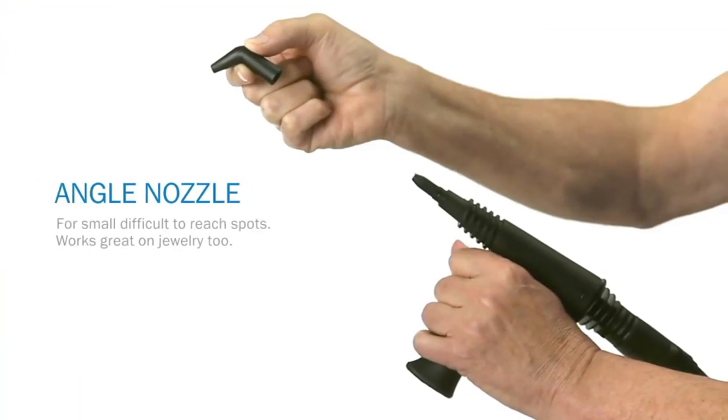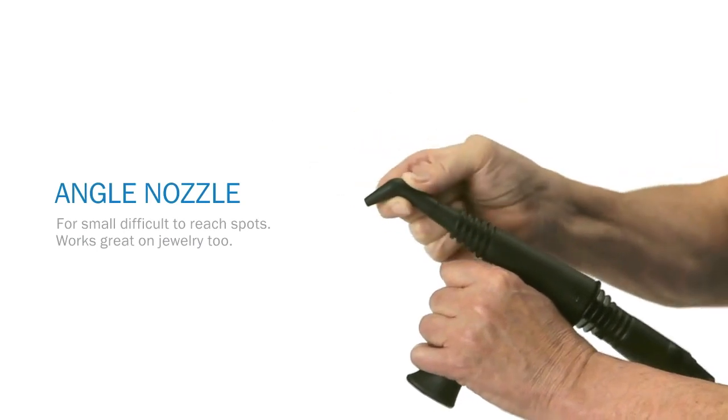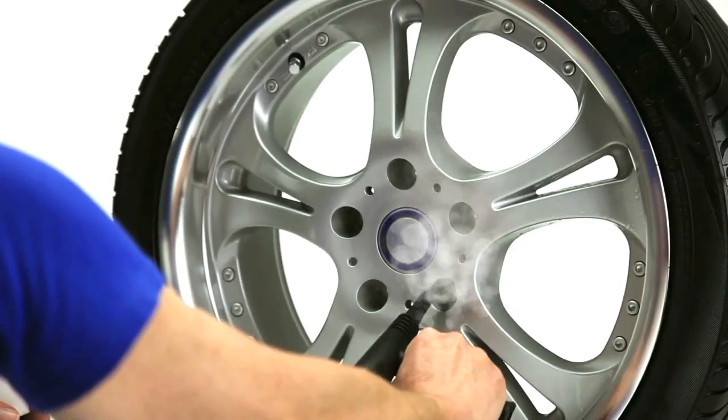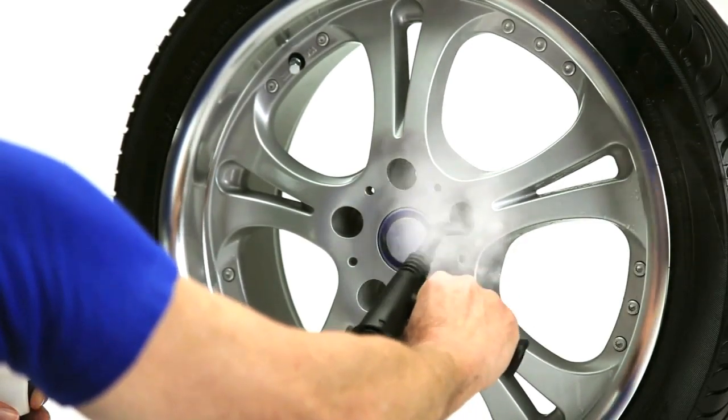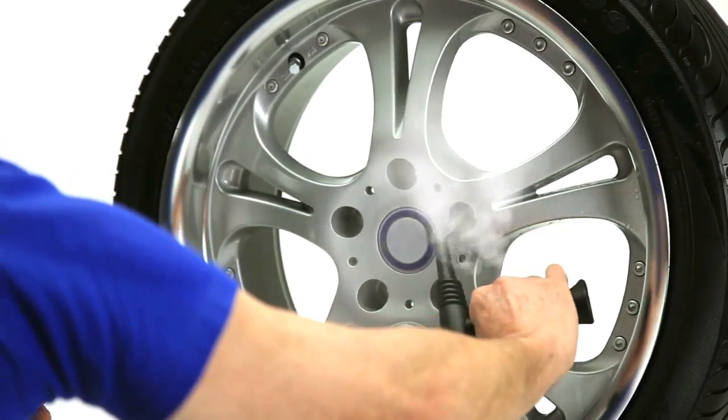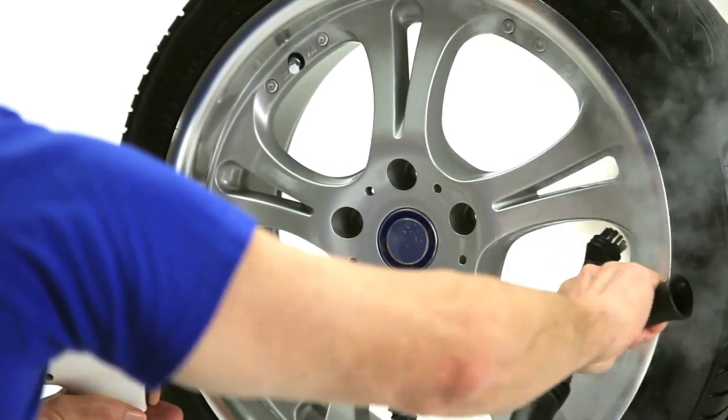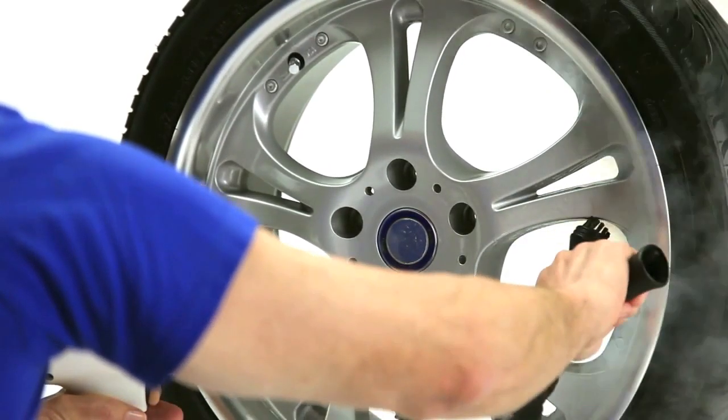For automotive interiors and exteriors, there's a Pronto attachment for those jobs, too. All those gritty, greasy bits dissolve and are easily wiped away. You'll save lots of money on detailing and maintenance. Oh, and if you love your motorcycle or bicycle, you're gonna love the Pronto.